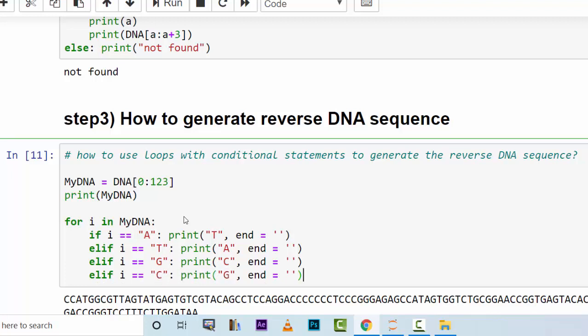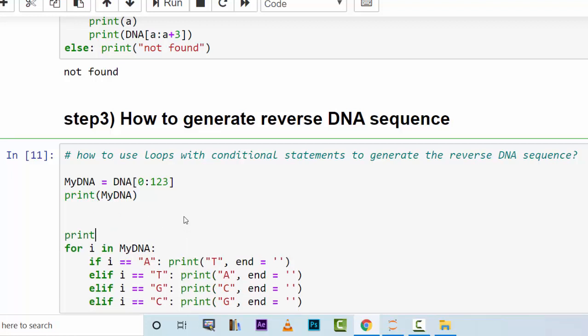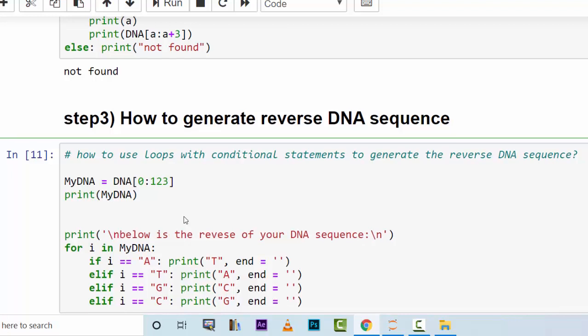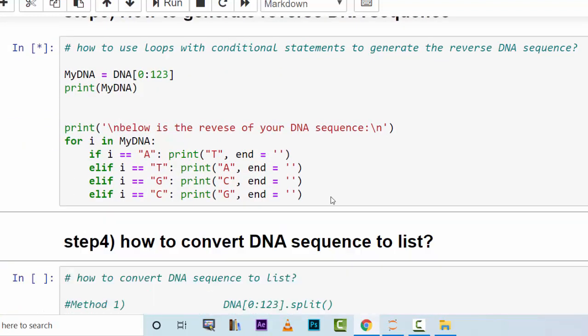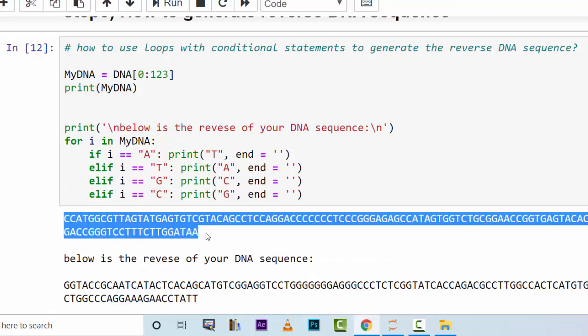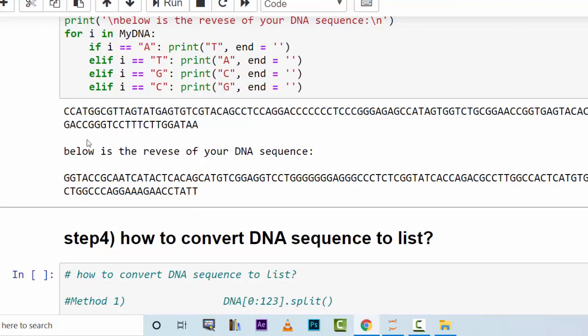Now we can run this and show you the output. And below is the reverse of your DNA sequence. Now it shows us this is the DNA sequence, and this one is the reverse of the DNA sequence, using for loops and if statements.